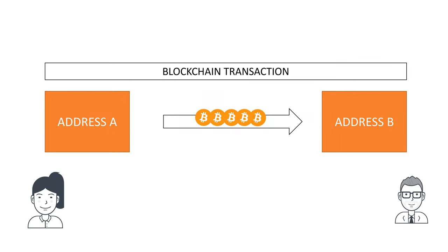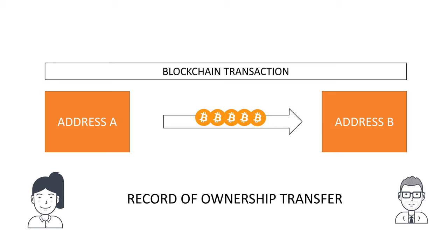When I say transfer, it doesn't mean moving from one place to another. The transaction is a record that shows that Alice transfers ownership over cryptocurrency to Bob. The transfer may be recorded in the database if this cryptocurrency belongs to Alice.